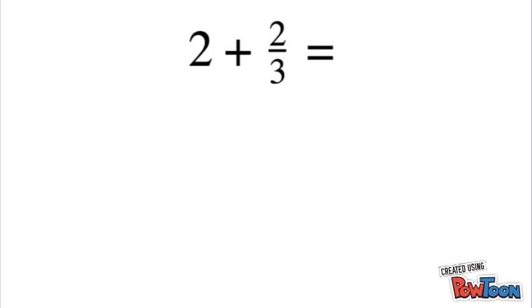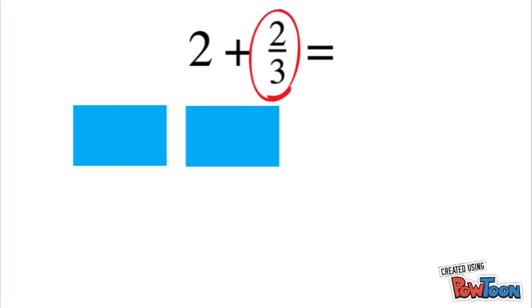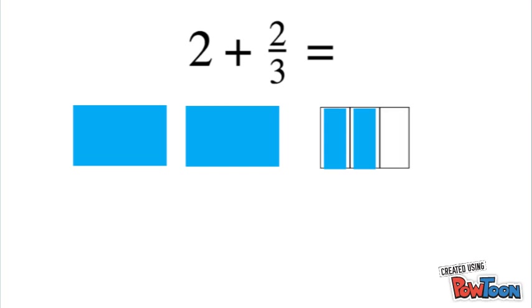First we got two wholes, so we're gonna make two wholes with our visual model. And then we have plus 2/3, so we need to make a model split into thirds and two of them shaded.